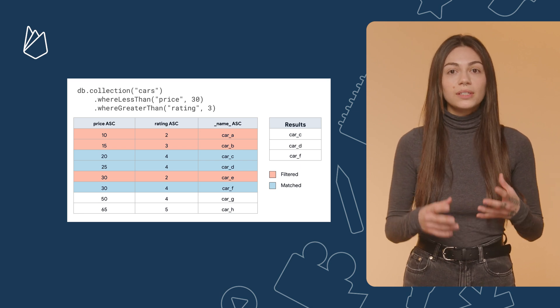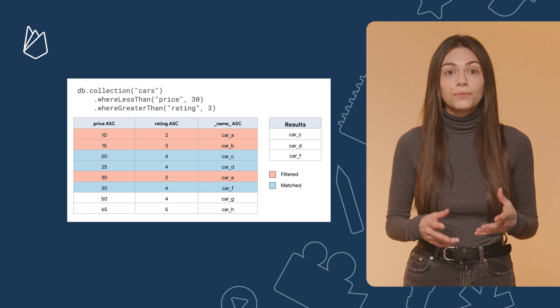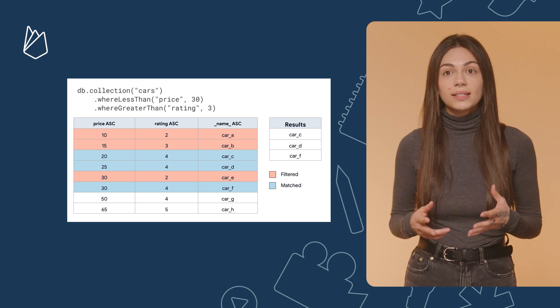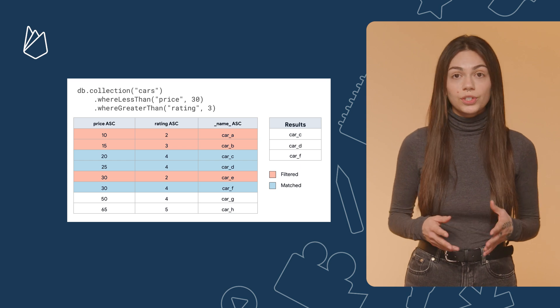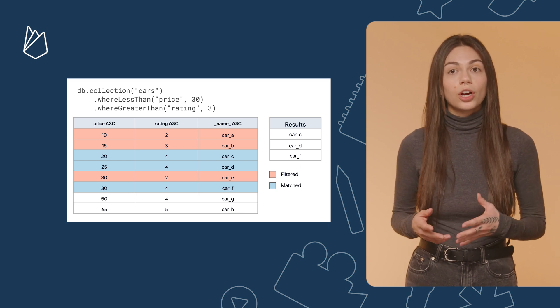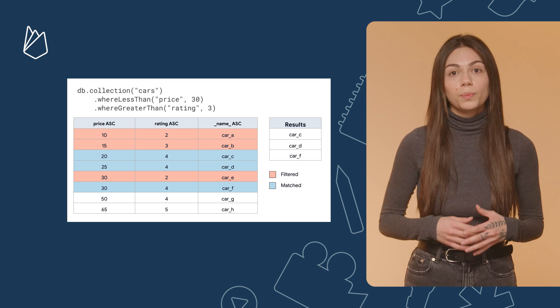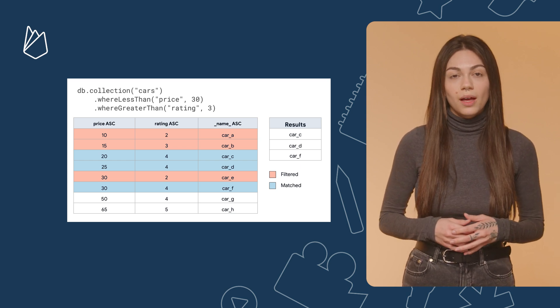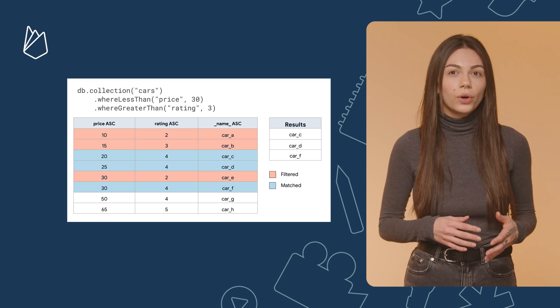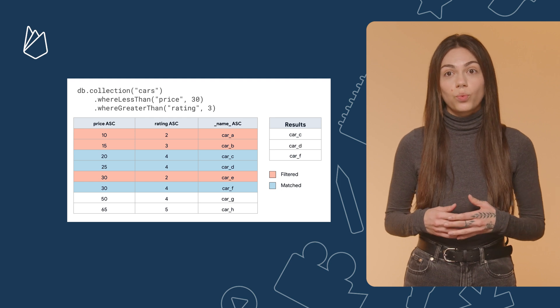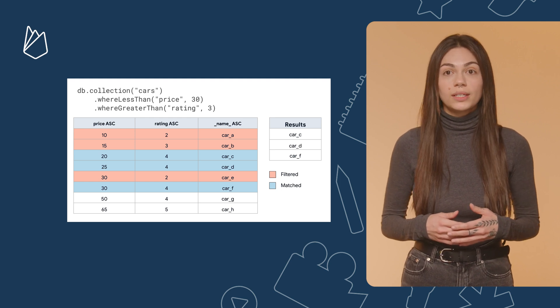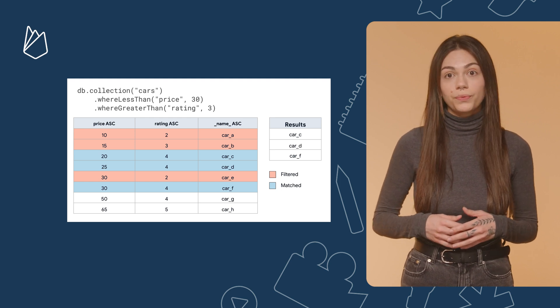So this is how it works: for each up to 1,000 index entries that are scanned but not returned, you're charged one document read. That's why it's important to optimize your queries that use range and inequality conditions on multiple fields.